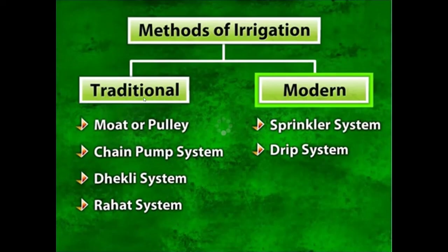Let us recall the methods of irrigation. Under the traditional system, we have four types: mod or pulley, chain pump, dhikali system, and rahat system. Under modern methods, we have the sprinkler system and drip system.